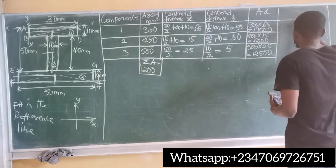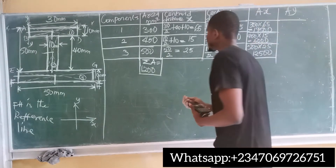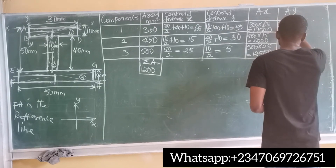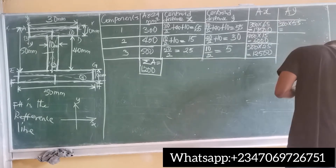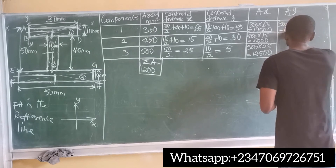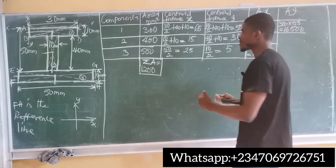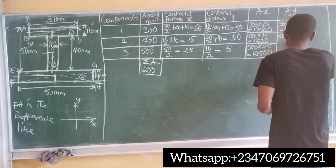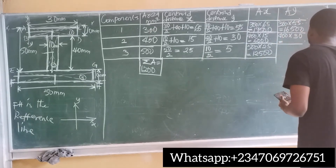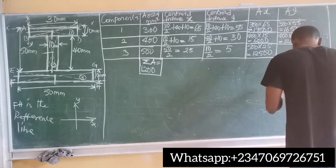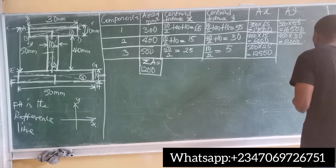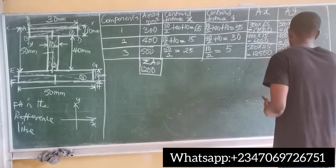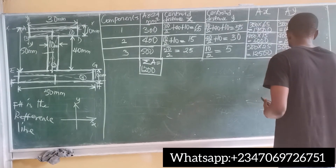Now find the product of each area and centroid distance Y (Ay). Segment 1: 300 times 55 equals 16,500. Segment 2: 400 times 30 equals 12,000. Segment 3: 500 times 5 equals 2,500.